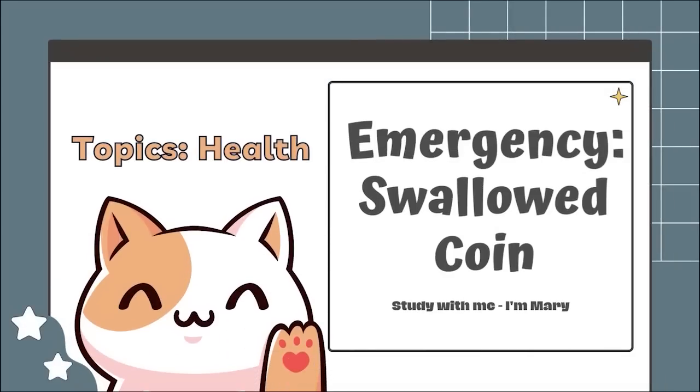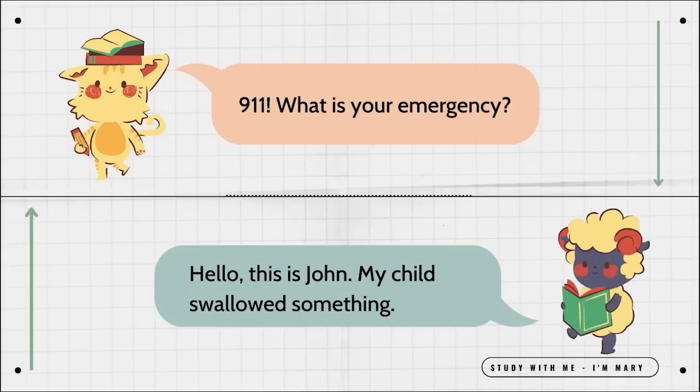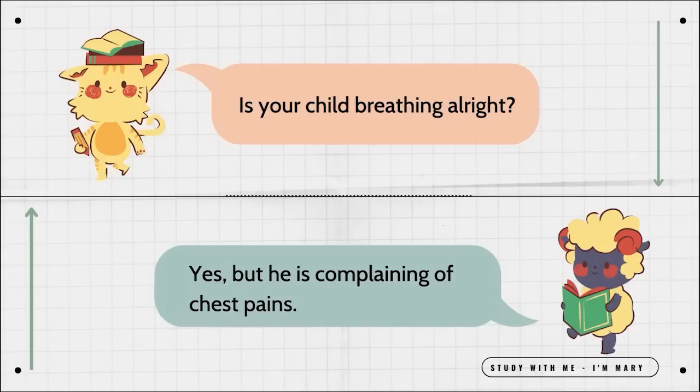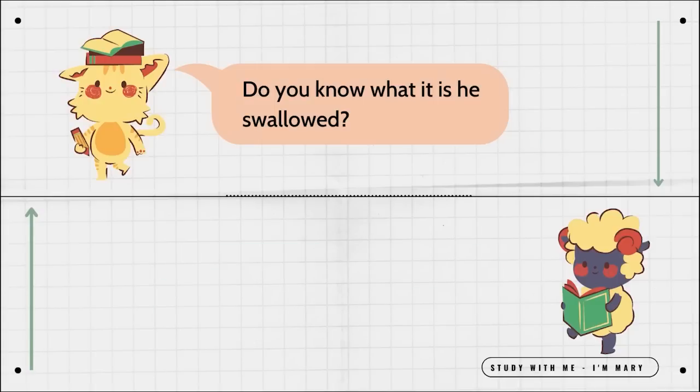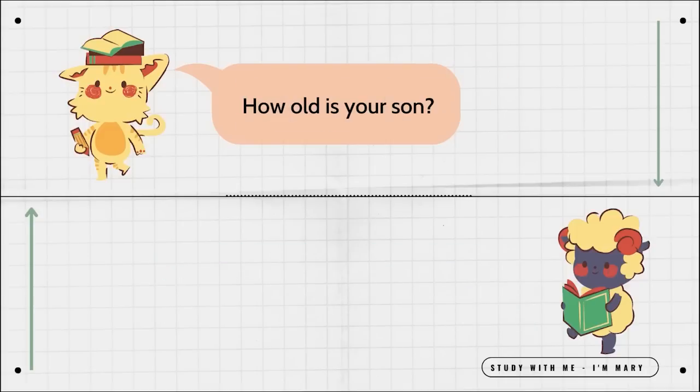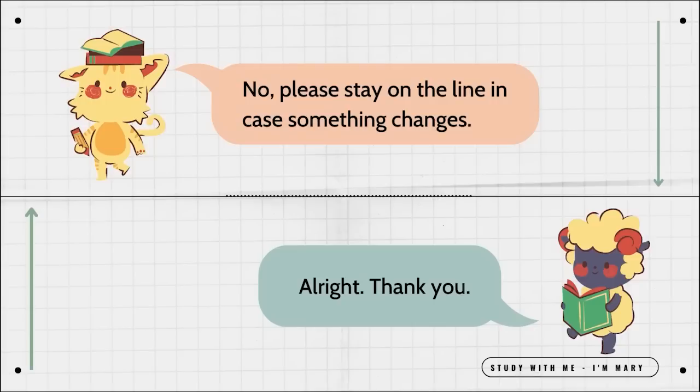911, what is your emergency? Hello, this is John. My child swallowed something. Is your child breathing all right? Yes, but he is complaining of chest pains. Do you know what it is he swallowed? It was a coin. I think it was a nickel. How old is your son? He's five years old. Please give me your address and we will send paramedics. Should I hang up after that? No. Please stay on the line in case something changes. All right. Thank you.